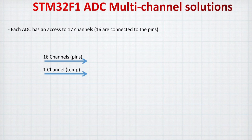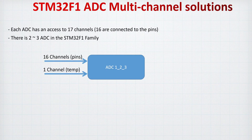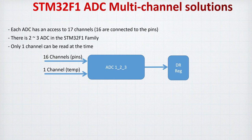As discussed in the previous tutorial, the ADC for the STM32F1 has 17 channels — 16 are directly connected to the pins, and one channel is connected internally to the microcontroller to read the temperature. These 16 or 17 channels are connected to the ADC where the conversion happens. The STM32F1 usually has two ADCs, and some variants have three. When conversion ends, it goes to the data register where you can read the value.